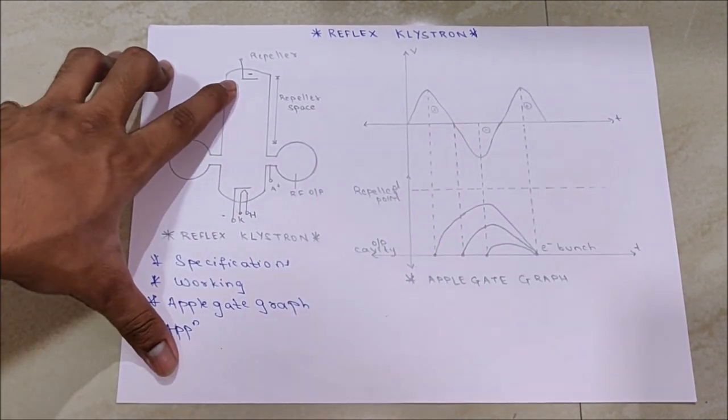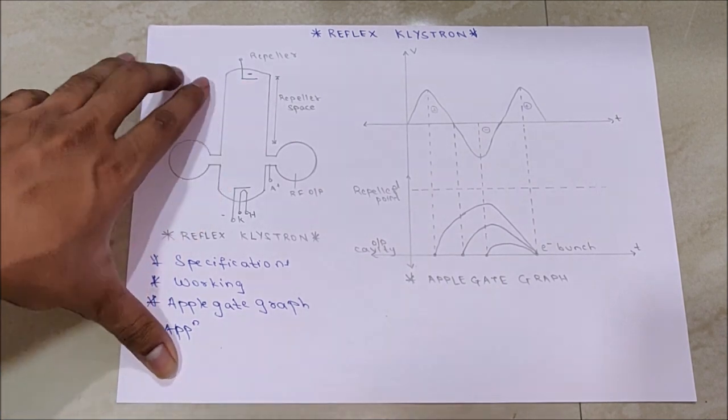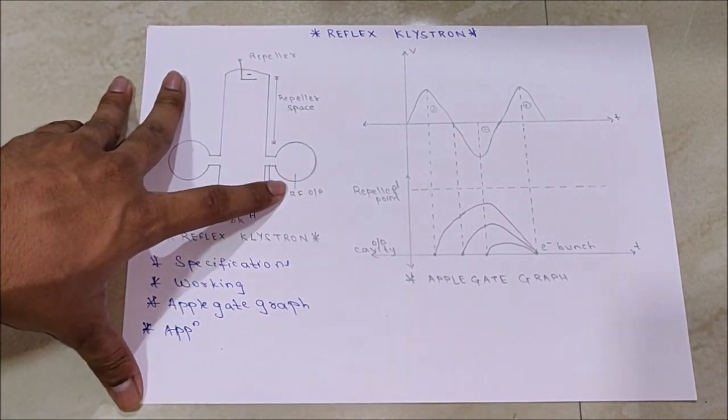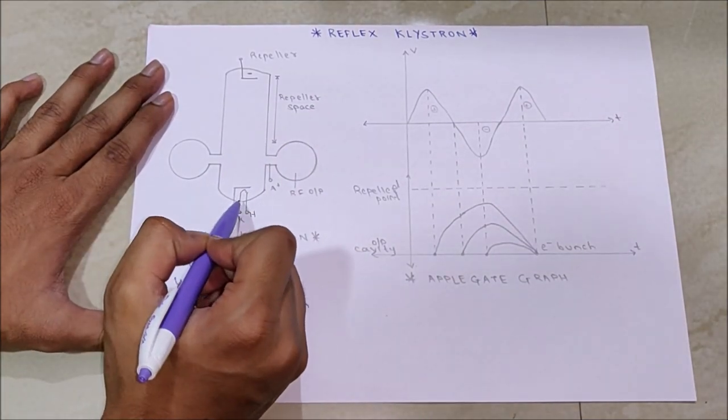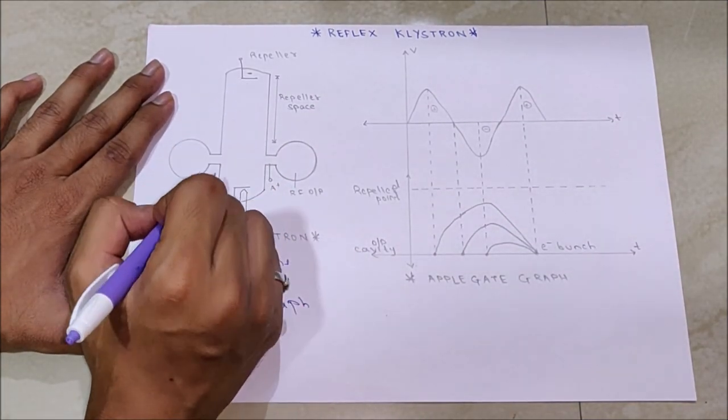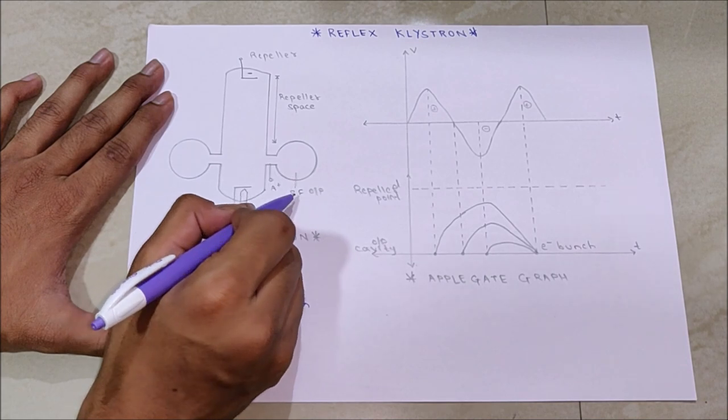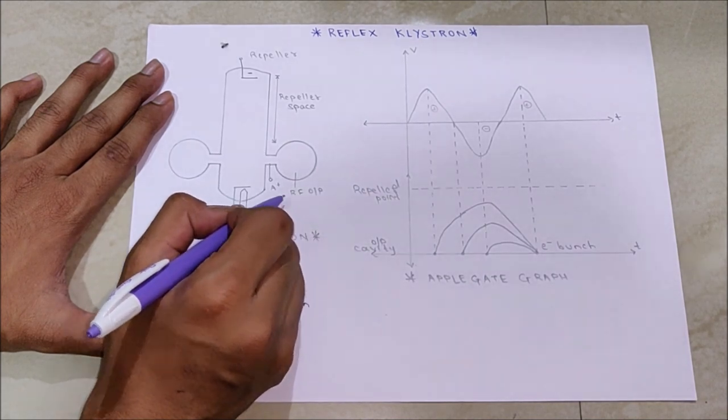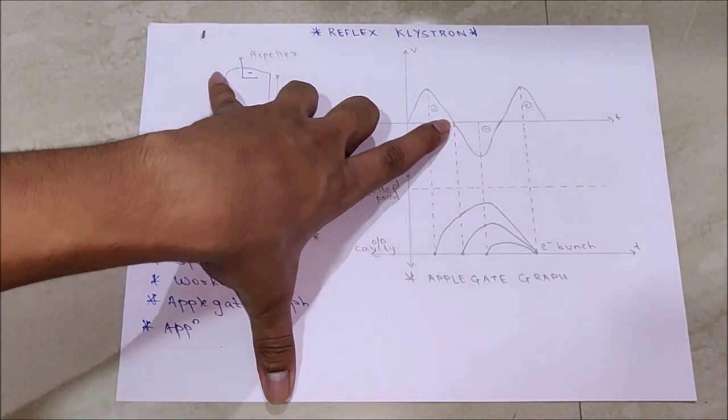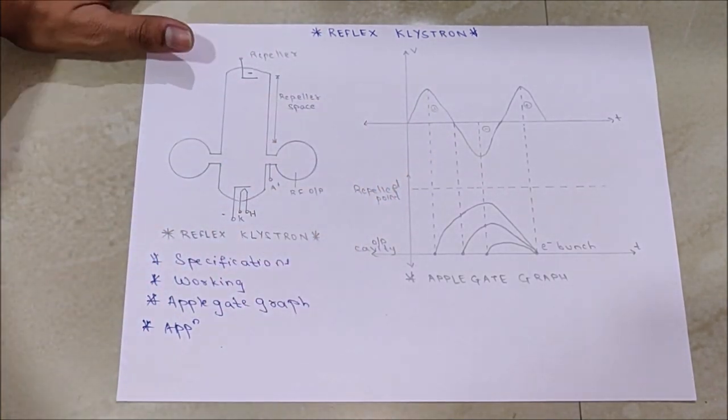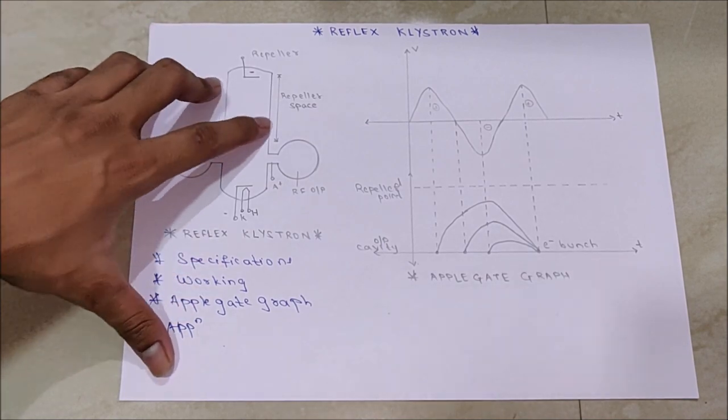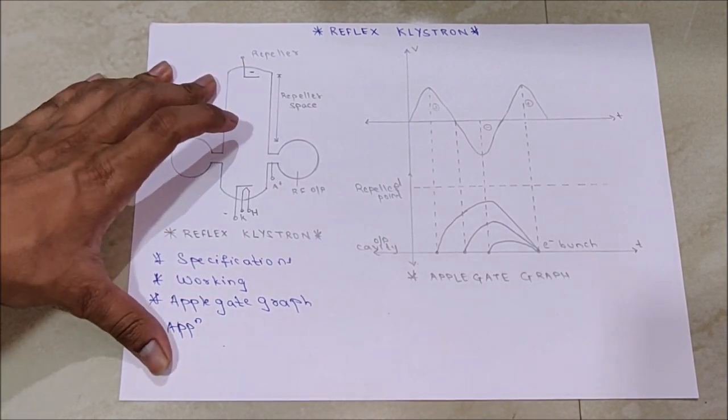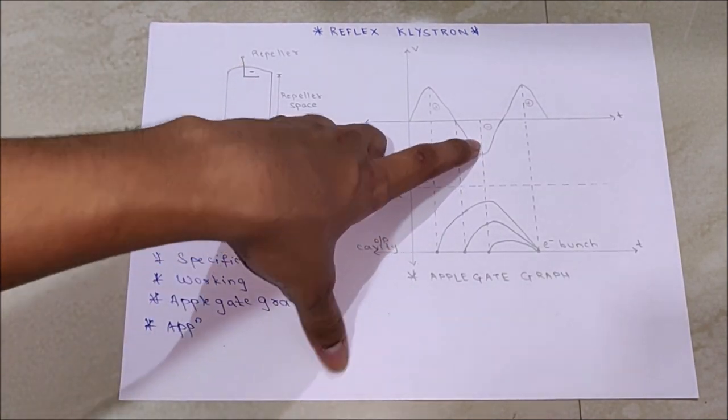The repeller will send back the electron beam to RF output cavity. For positive cycle, when the beam is traveling towards repeller, it sends back the signal to RF output cavity. For no noise condition, it will travel with average speed and cover average distance in repeller space.